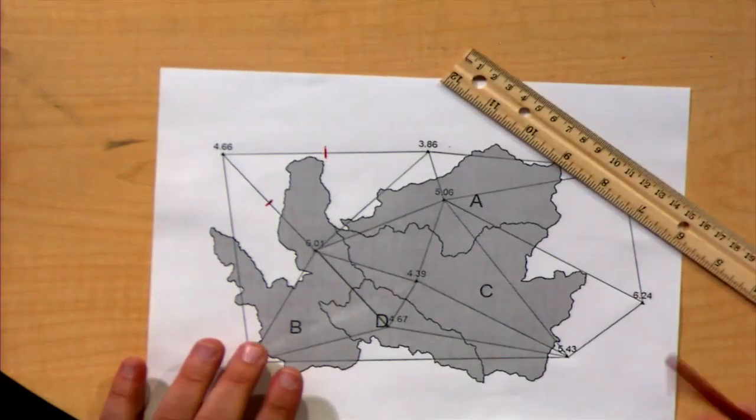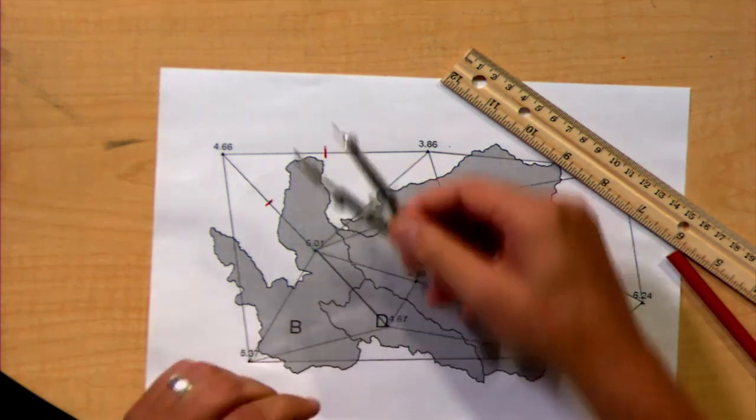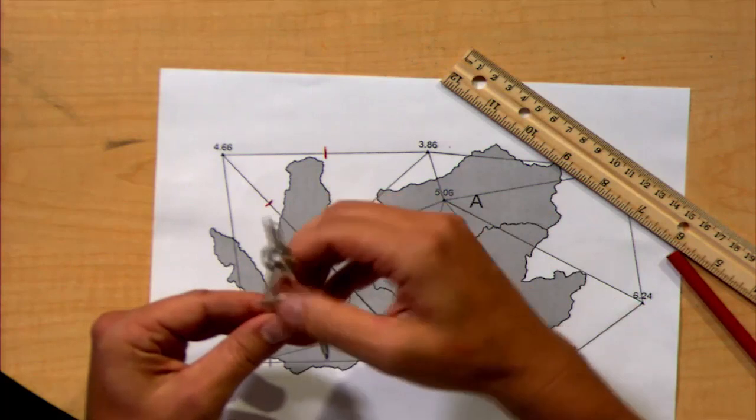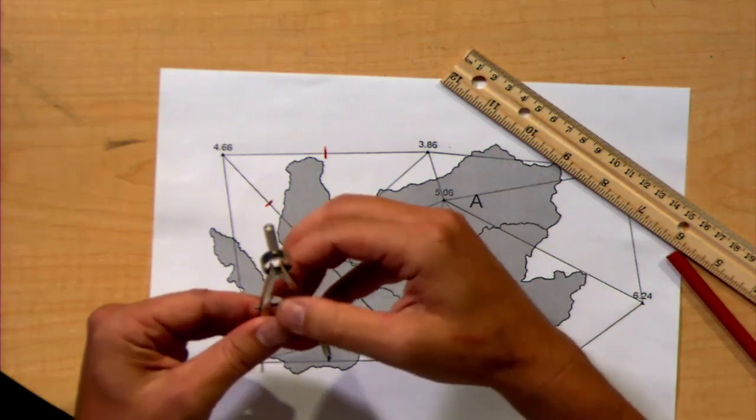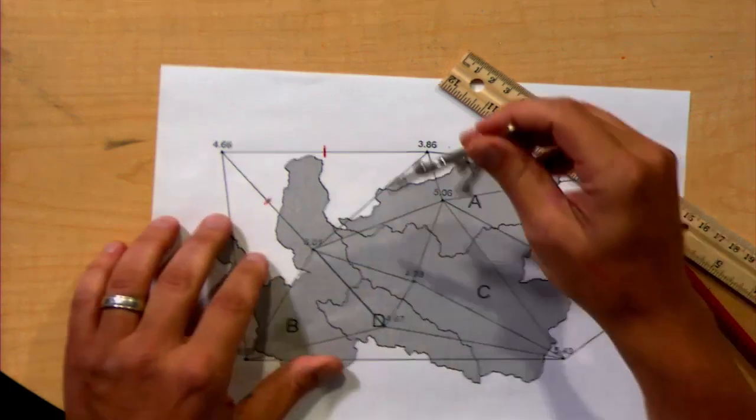Now, you might recall from your geometry class a method of creating a bisector, a perpendicular bisector, using a compass. If I choose to use a compass, I can do so. This actually creates a fairly accurate and fairly quick method of doing so.